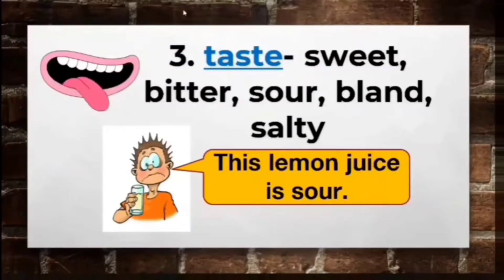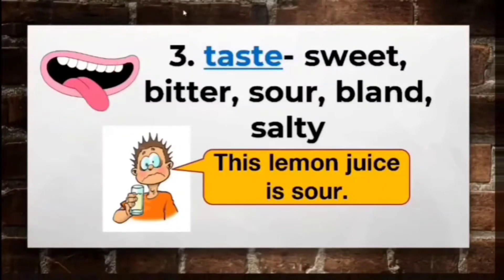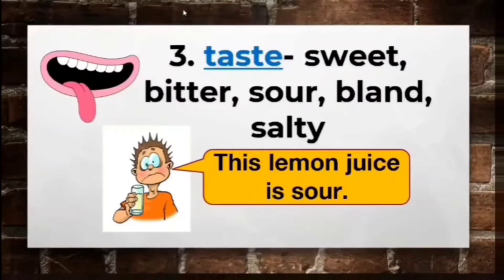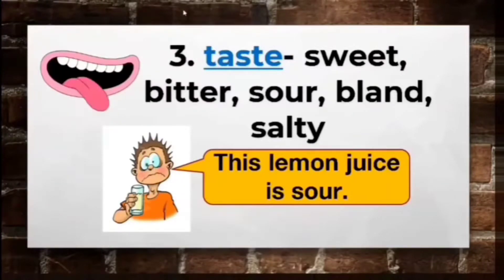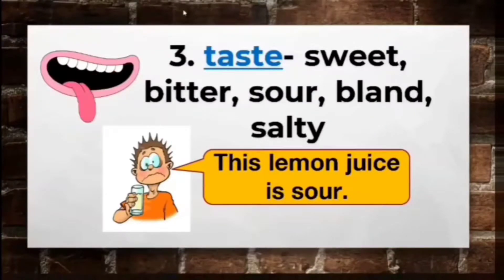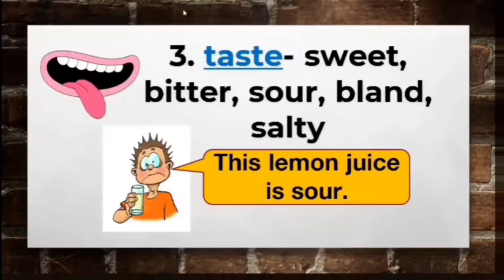Our tongue is the one that determines the taste of objects that can be eaten. Just be reminded that not all objects that you want to observe can be eaten or tasted. There are different types of tastes that our tongue can determine: sweet, sour, salty, and bitter. In the picture, a boy drinks lemon juice and according to him, this lemon juice is sour. In your notebook, write at least two sentences that use your sense of taste. All you need to do is to taste the food and let your tongue work for you.